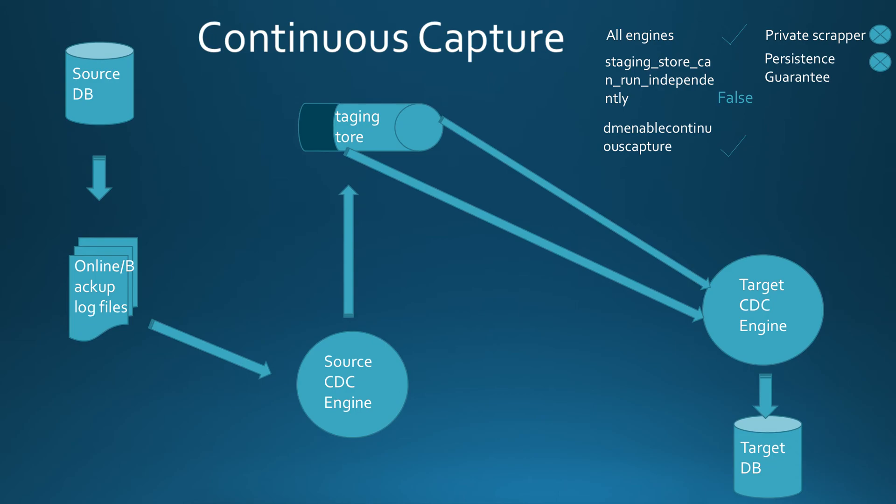Therefore, when running with continuous scrape, it is always advisable that all subscriptions need to be run at the same time. This feature will not help and should not be used in situations where the target consumes changes slower than the source can produce them. This feature is meant to be used when the source is indeed the bottleneck.